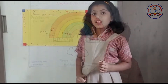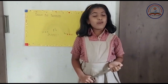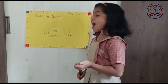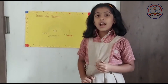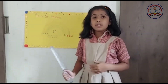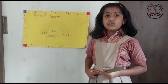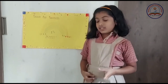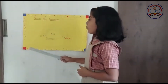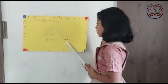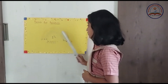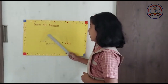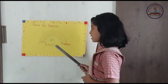Good morning everyone. Today I am going to explain about factors and multiples. I have taken number 12. Now we are going to learn about factors. 1 × 12 = 12, 2 × 6 = 12, 3 × 4 = 12.